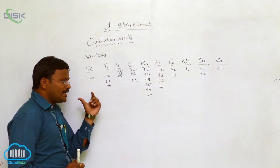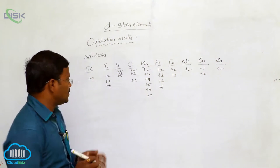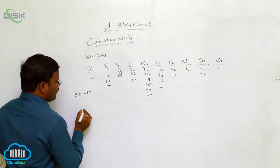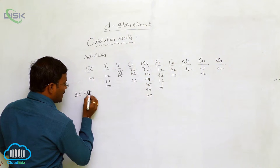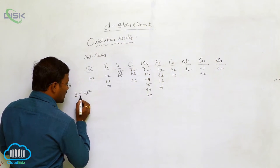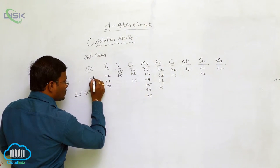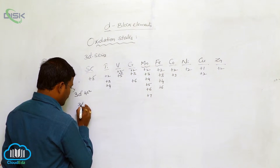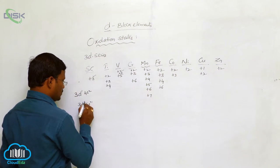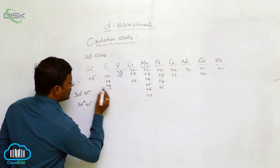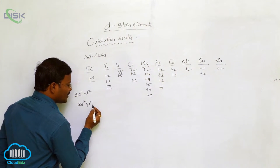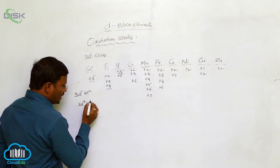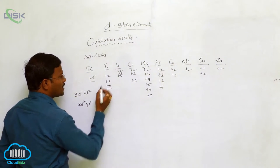So why does scandium exhibit a plus 3 oxidation state? In its valence orbit, the electron configuration for scandium is 3D1, 4S2. When scandium loses 3 electrons — 2 electrons from the s-orbital and 1 electron from the d-orbital — it occupies the plus 3 ionic form. For titanium, the configuration is 3D2, 4S2; eliminating 2 electrons from the s-orbital and 2 from the d-orbital gives plus 4, while losing only from one gives plus 2.